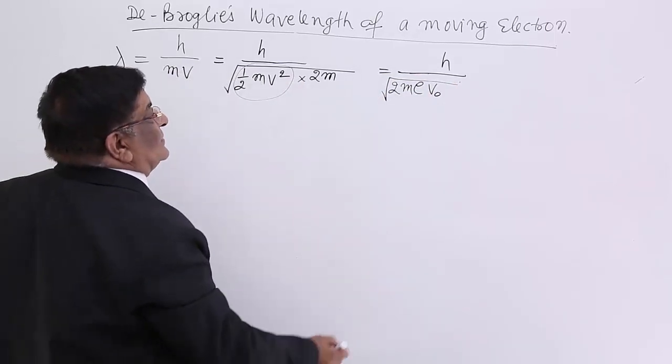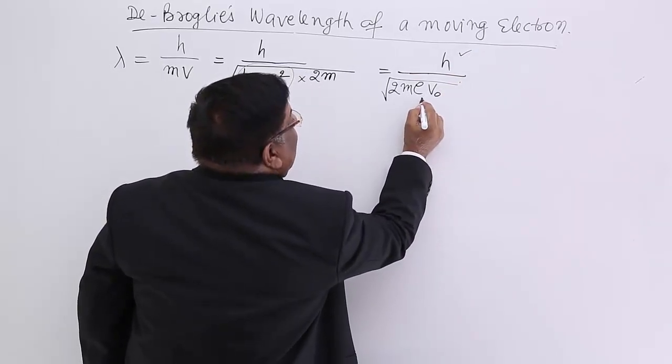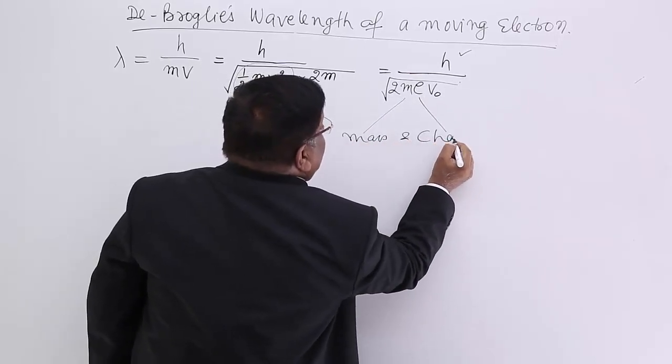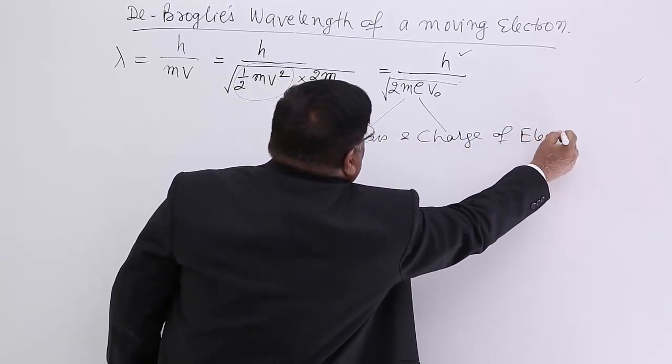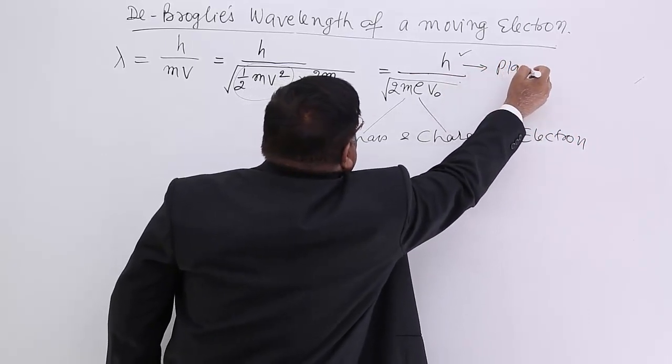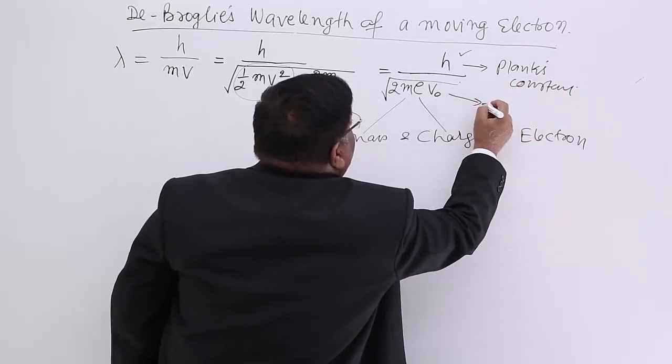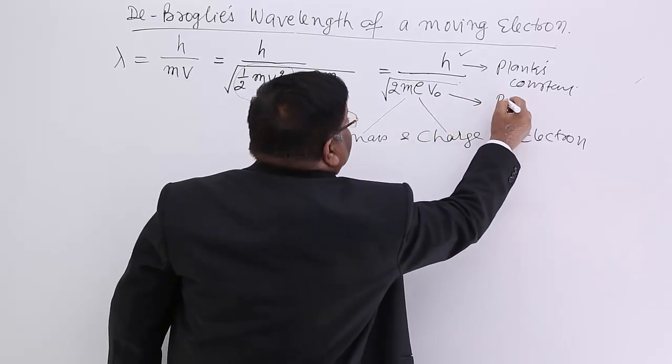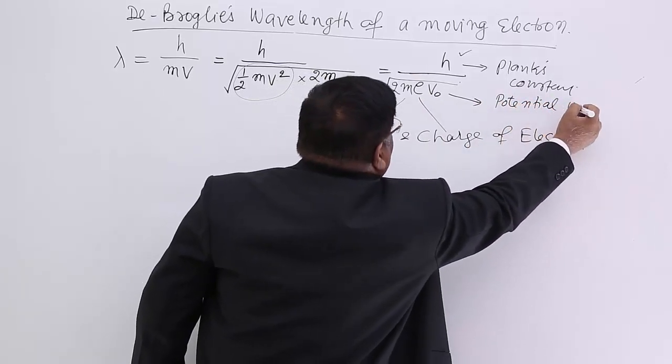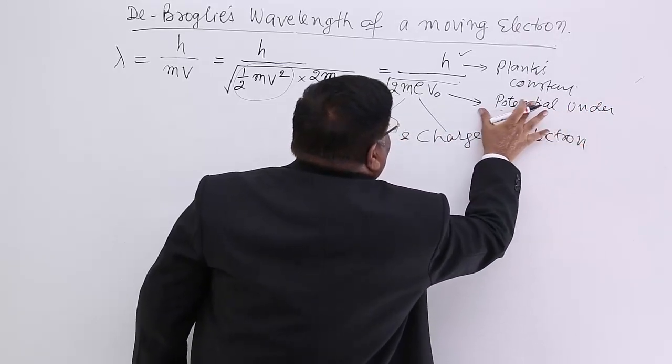Now, see the quantities: h is Planck's constant, M is mass of electron, E is charge of electron. V₀ is the potential under which the electron is moving, or we can say potential applied.